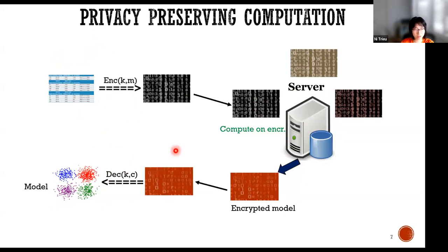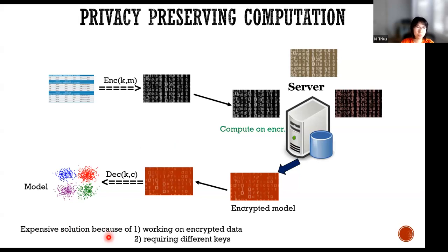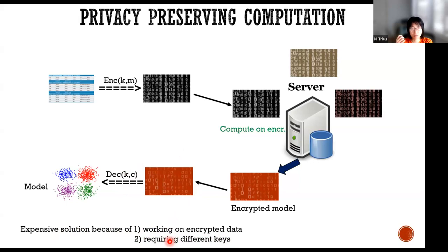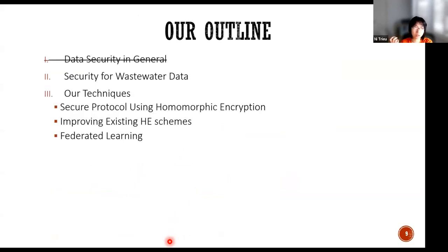But there are problems with this approach. First, if you apply homomorphic encryption directly, it's not an inexpensive solution. Also, regarding who has the key — you can think of it as requiring different keys for different parties. Now, how about security specifically for wastewater data? This is what our proposal addresses.